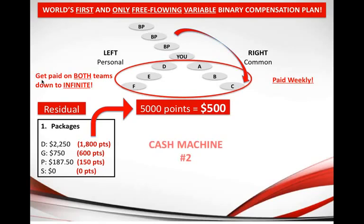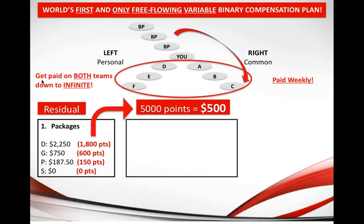Cash Machine Number Two is called the MIA program — the Monthly Inventory Account program. The beauty of our products is that they are wants, not needs. Most companies out there have a need and try to convince you that you need their products. But our products are a want, and a want is much more powerful than a need. People don't need to smoke — they want to. People don't need to buy jewelry and beautiful designer products — they want to. It's emotional, it's instant gratification.